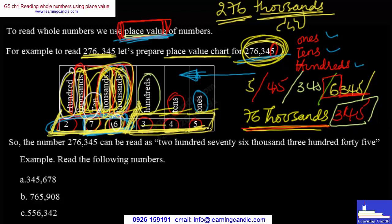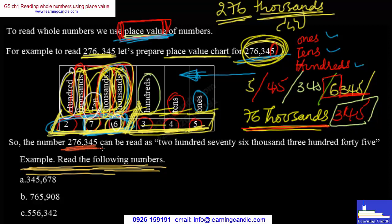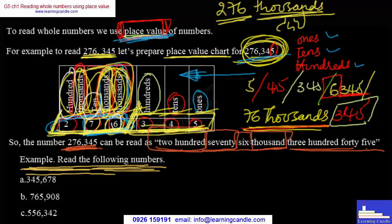Let's read the following numbers. If we have a place value, we can add place value to the place value, which will be 276,345. What we are going to do here is: if it were a thousand, it would be 200,000, 70,000, and we would have 6,000. We have the same thing: 200, 76,000, and we would have to say 300,000, 345.